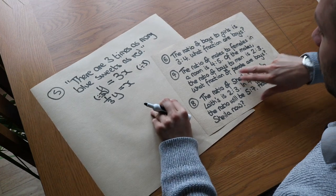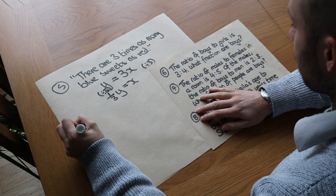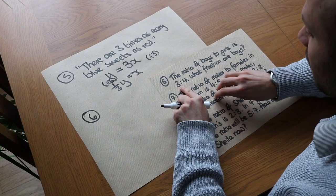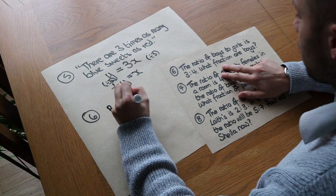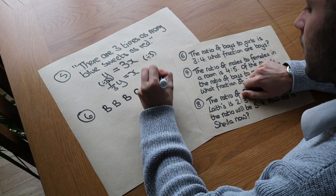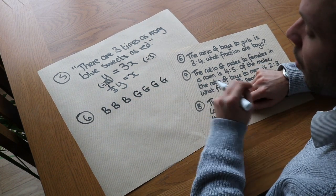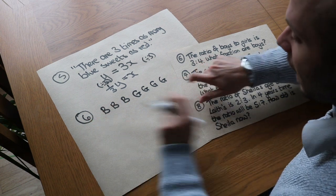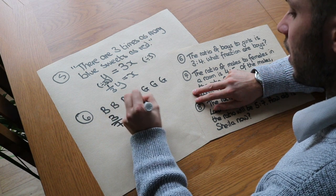The ratio of boys to girls is 3 to 4 — what fraction are boys? For each 3 boys we have 4 girls. If we just had 3 boys and 4 girls, what fraction of the children are boys? Well, we can see it's 3 out of the 7 children, so it's 3-sevenths are boys.